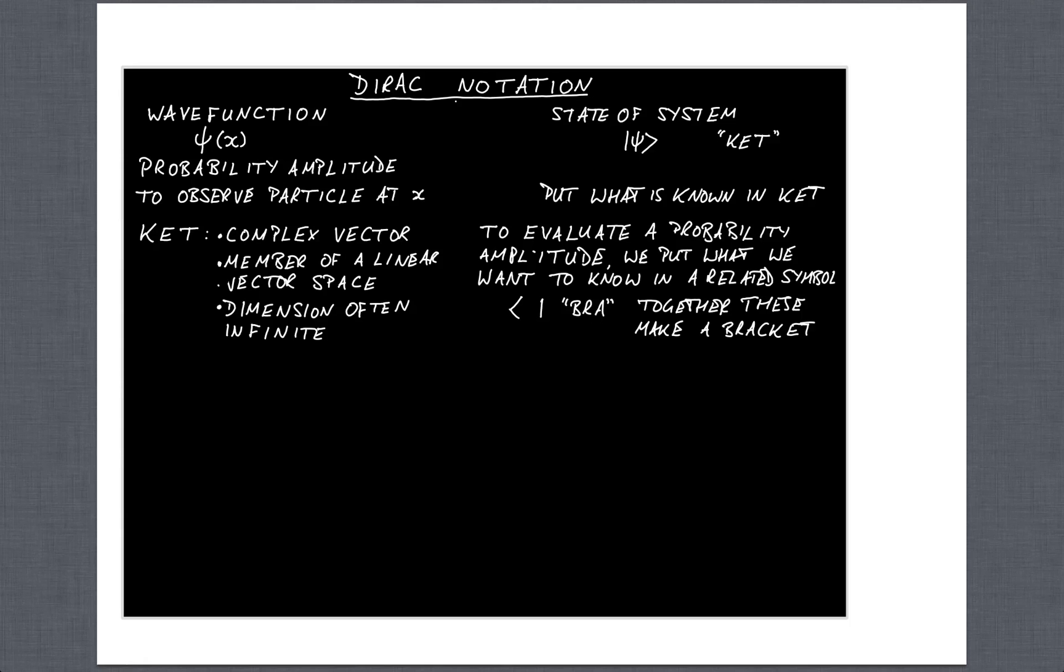The ket is a complex vector. It's a member of a linear vector space. The dimension of that space is often infinite, so if you want to write it in terms of a position then that may well be an infinite number of members.